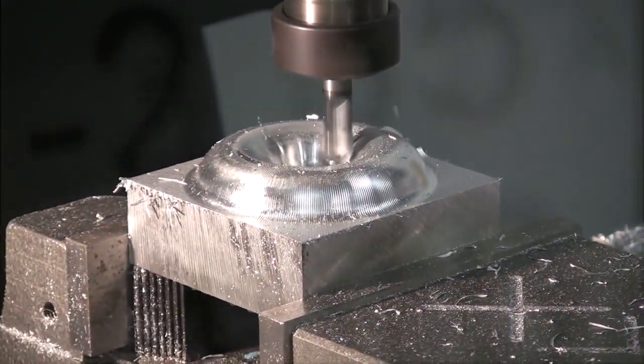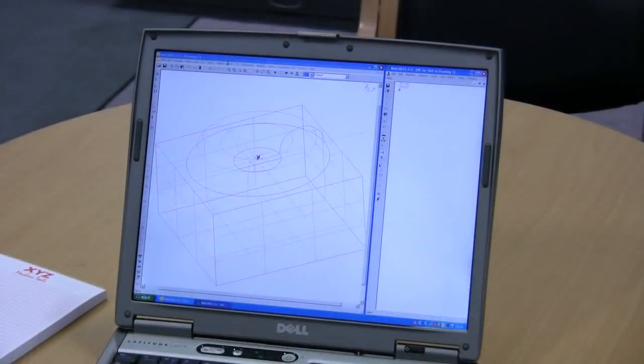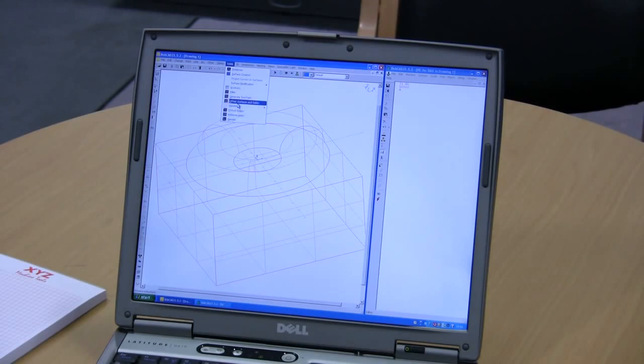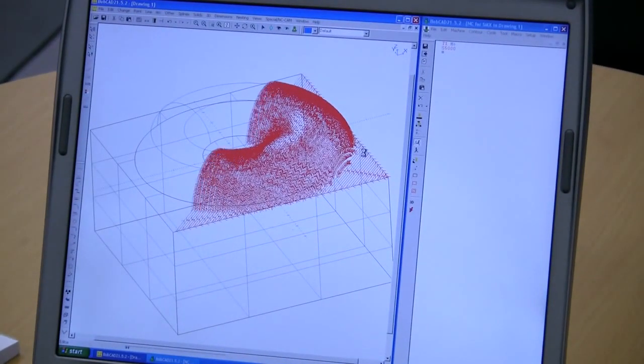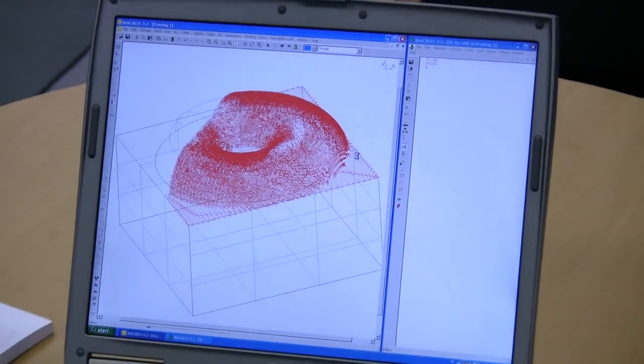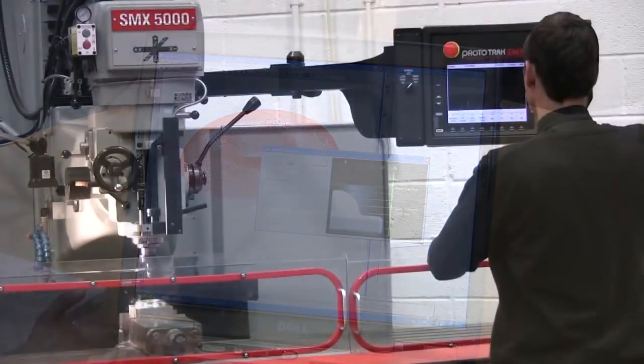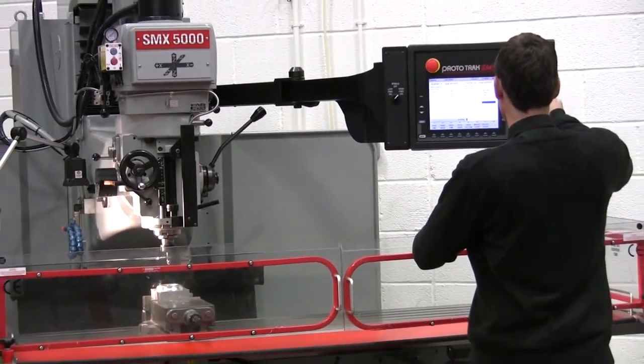Getting work into the SMX is also nice and easy. All file types are supported. Or you can input programs directly from your PC, via Ethernet or USB. Or, of course, there's the Prototrack way, right there at the machine tool.